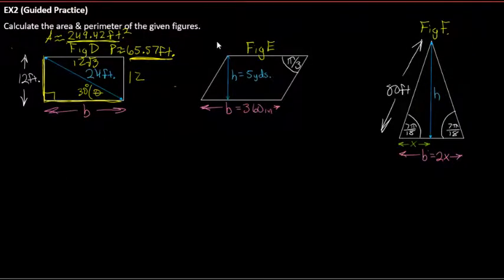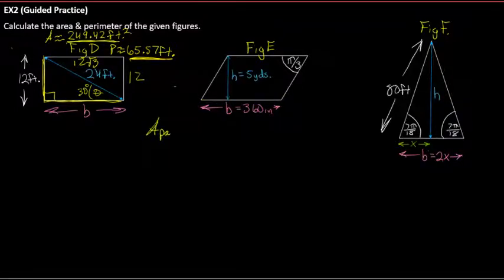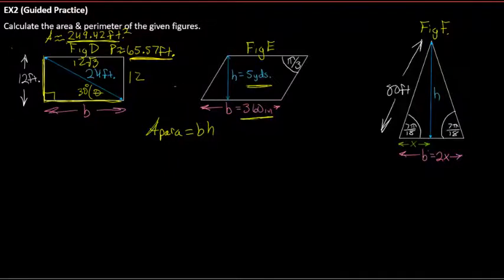Figure E is a parallelogram. Area equals base times height, but we've got a base in inches and a height in yards — they have to be in the same units. It'll be easier to convert both to yards.